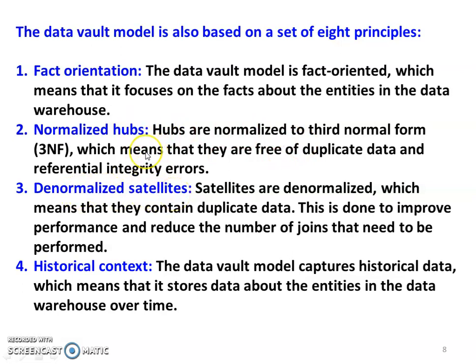Third, denormalised satellites — in the hub we store only original data with no duplication, whereas in the satellite data is denormalised, meaning duplicate data may be available. This is done to improve performance and reduce the number of joins. Fourth, historical context — data is stored over time, for example a particular car's design, manufacturing, and sales data stored over ten years represents historical information.